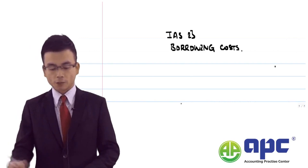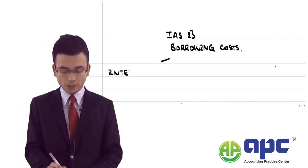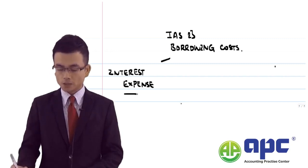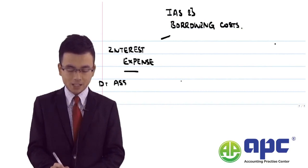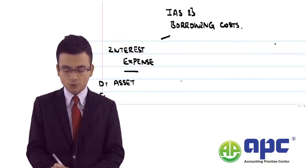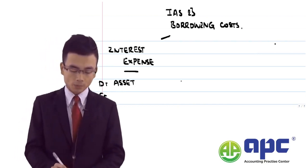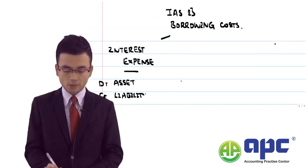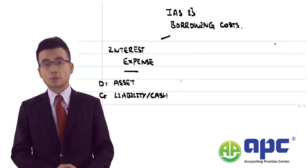This section covers first the concept of interest expense to be capitalised — we're talking about capital expenditure. If it meets certain criteria, we debit the asset at cost account and credit either the accrued expense liability or cash/bank if the interest has already been paid.